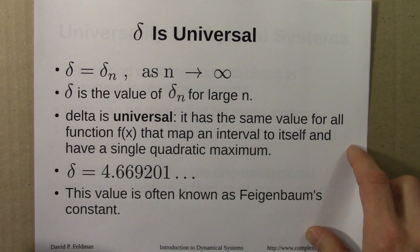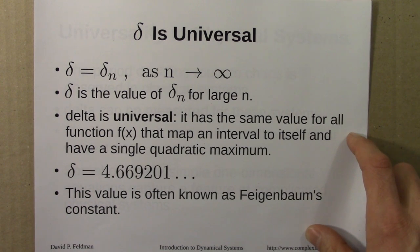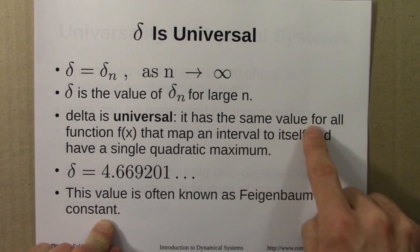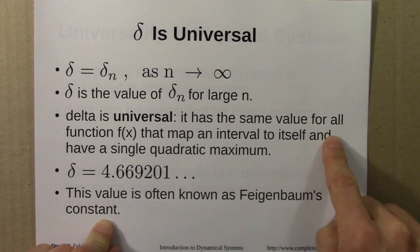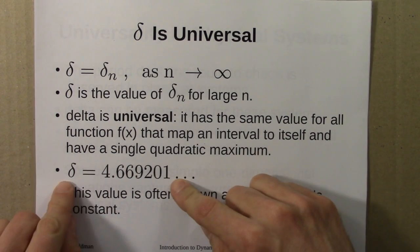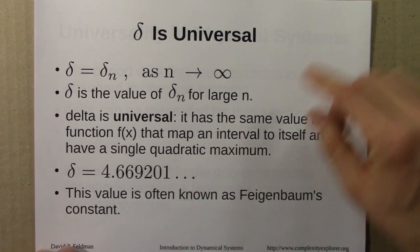So that's the phenomenon of universality in maps. One-dimensional functions that obey this criteria will have the same delta — the same ratio.